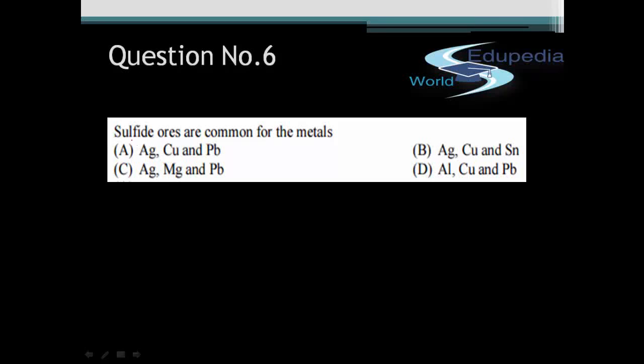Alright students, let's come to question number 6. Question number 6 states that sulfide ores are common for the metals. This is a fairly simple question from the chapter of metallurgy which expects us to know the names of the ores of those elements which occur as sulfides. The correct answer for this question would be A because